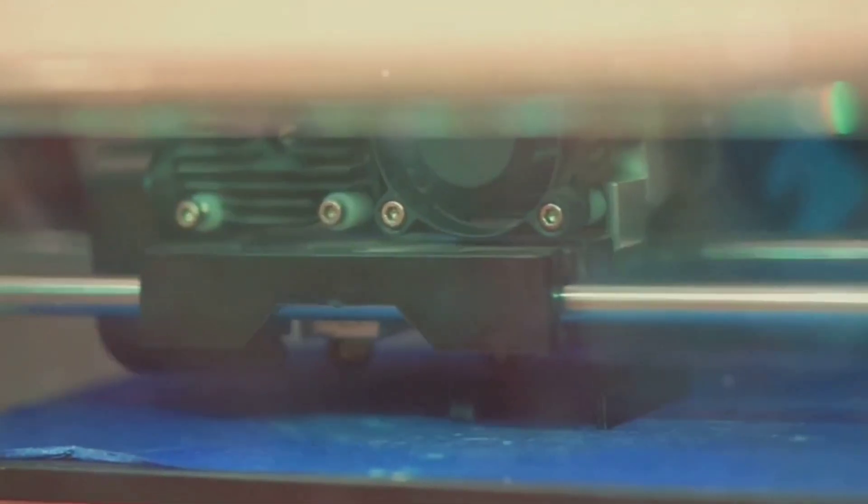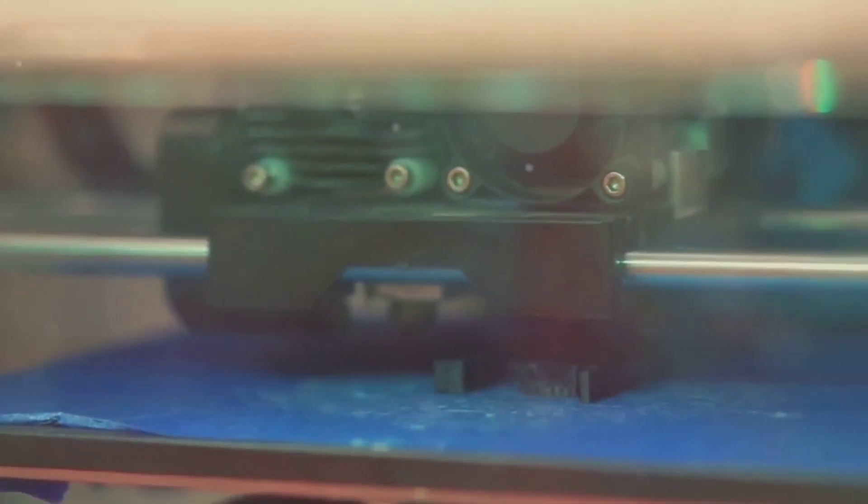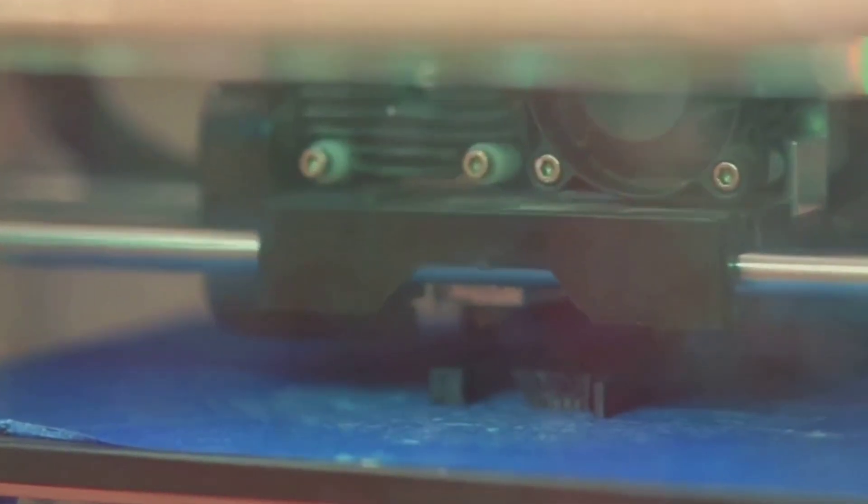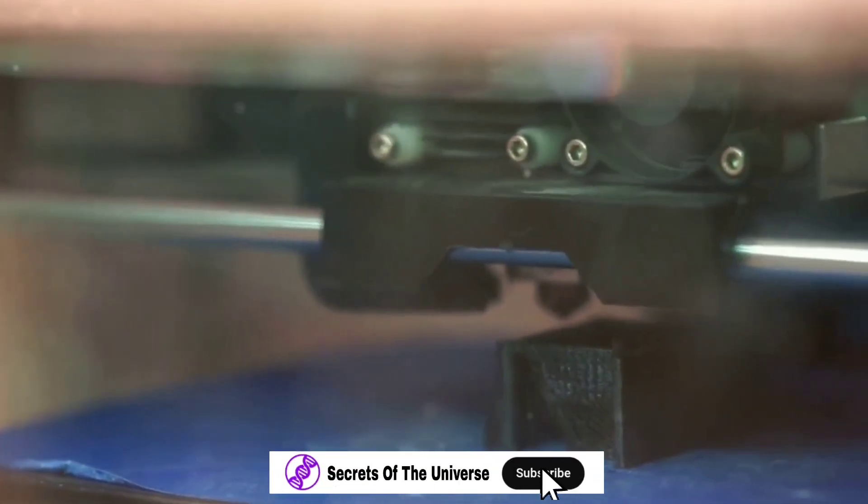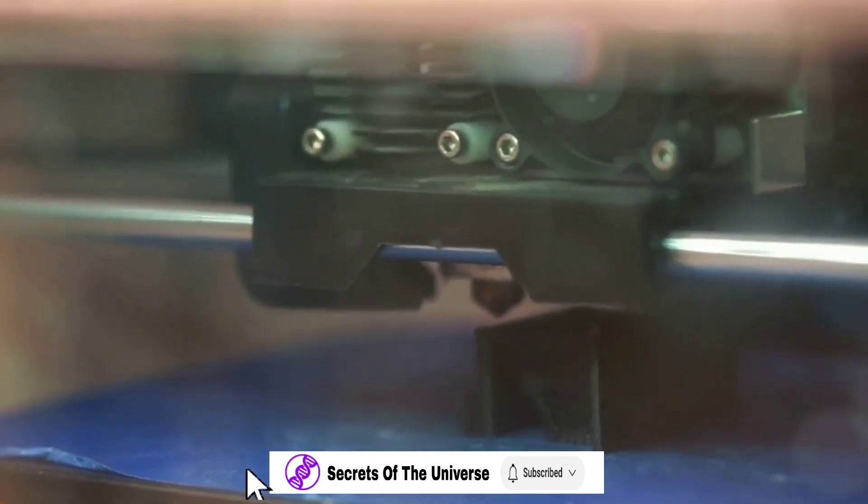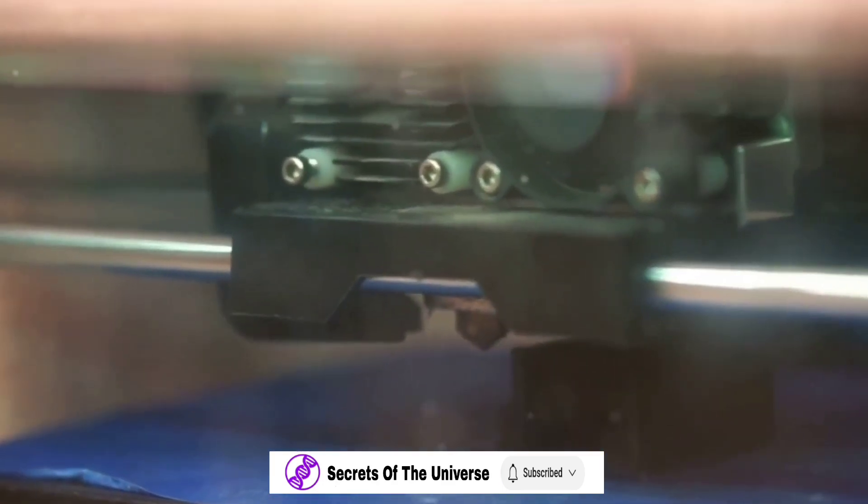Another promising technique is 3D bioprinting, where biological materials are used to print layers of cell-laden inks to build up a fully functional organ. This could potentially allow us to print a new heart or kidney in the lab, ready to be transplanted into a patient in need. Researchers have already managed to print miniature versions of human organs known as organoids, which can be used to test new drugs and treatments.